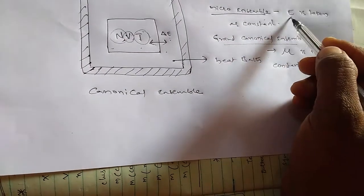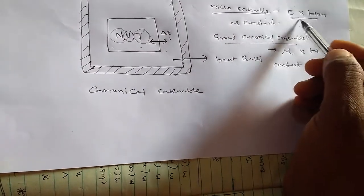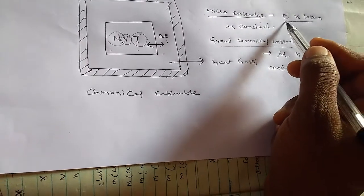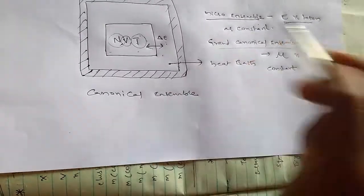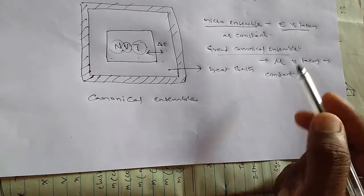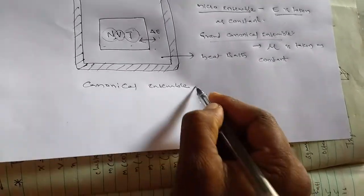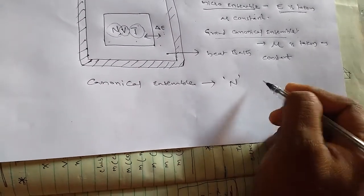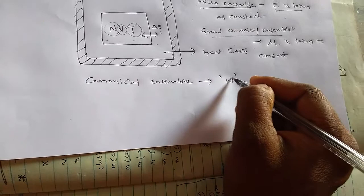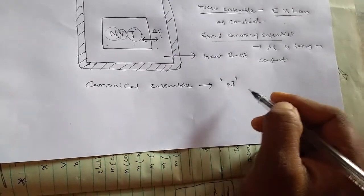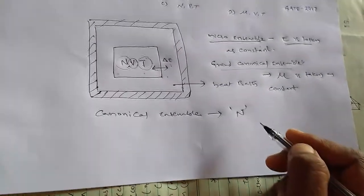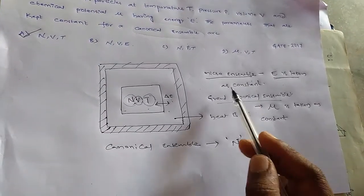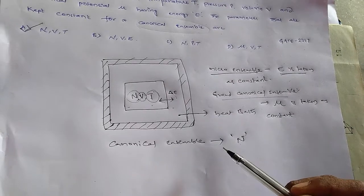In grand canonical ensemble, internal energy is conserved. Energy is constant in microcanonical ensemble, but in canonical ensemble, number of particles N is constant - there is no change in number of particles in the system. So this is about canonical ensemble, microcanonical ensemble, and grand canonical ensemble. Thank you.